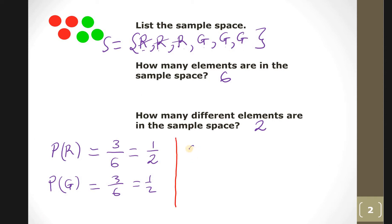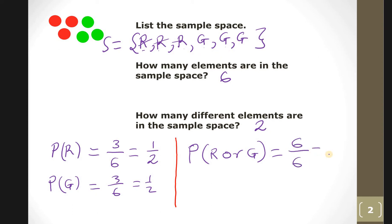What is the probability of getting a red or a green? If you put your hand in the jar you'll definitely get a marble — it can be green or red. There are three red and three green, so six out of six, which equals one.